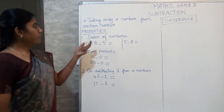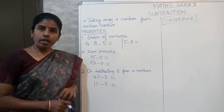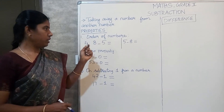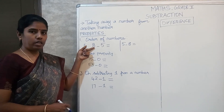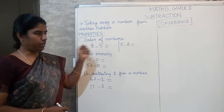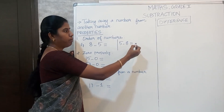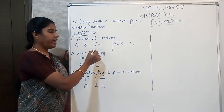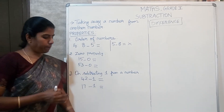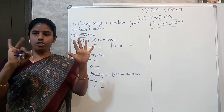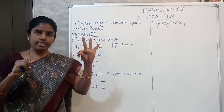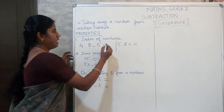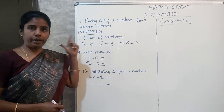The first property is the order of numbers. The order of numbers is very important. The way we write the numbers is the order. Always in subtraction, the first number should be the bigger number and then the smaller number. So 8 minus 5: we have 8 and take away 5, and the answer is 3. The term for the answer we get after subtraction is called the difference, so the difference is 3 here.